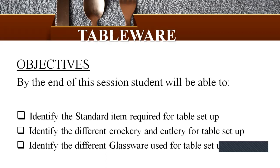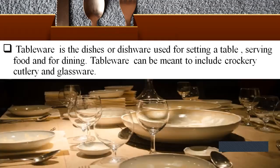For example, highball glass, red wine glass, white wine glass, and water goblet. Let us understand what is the definition of tableware. Tableware is the dishes or dishware used for setting a table, serving food, and for dining. Tableware can be meant to include crockery, cutlery, and glassware.